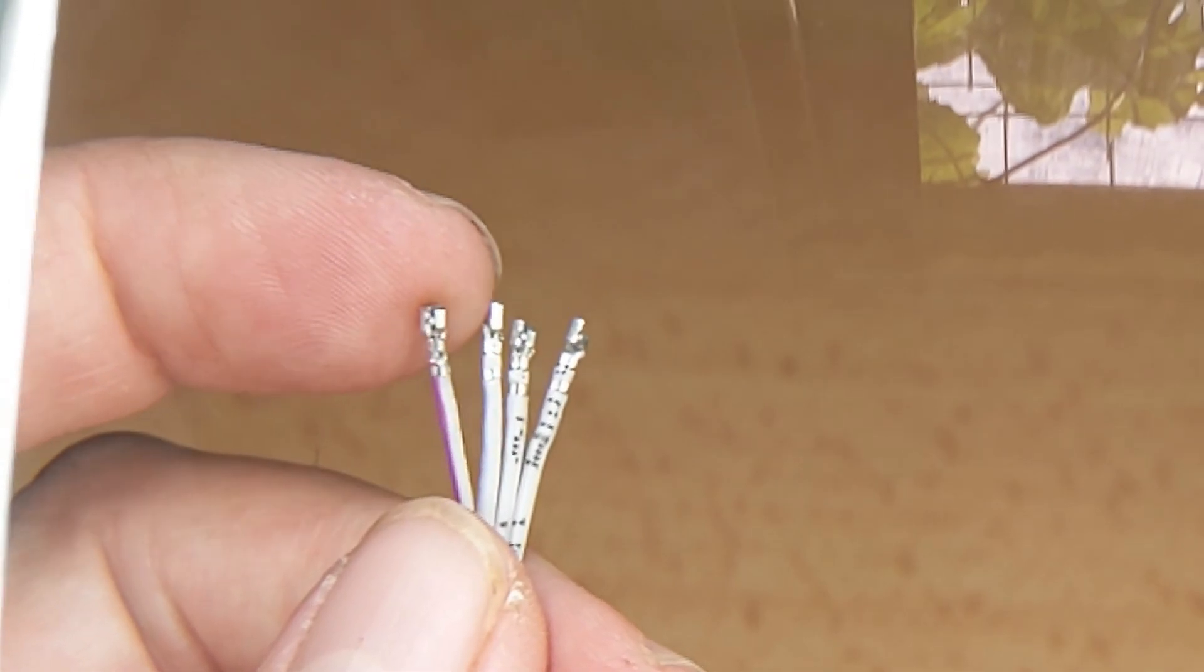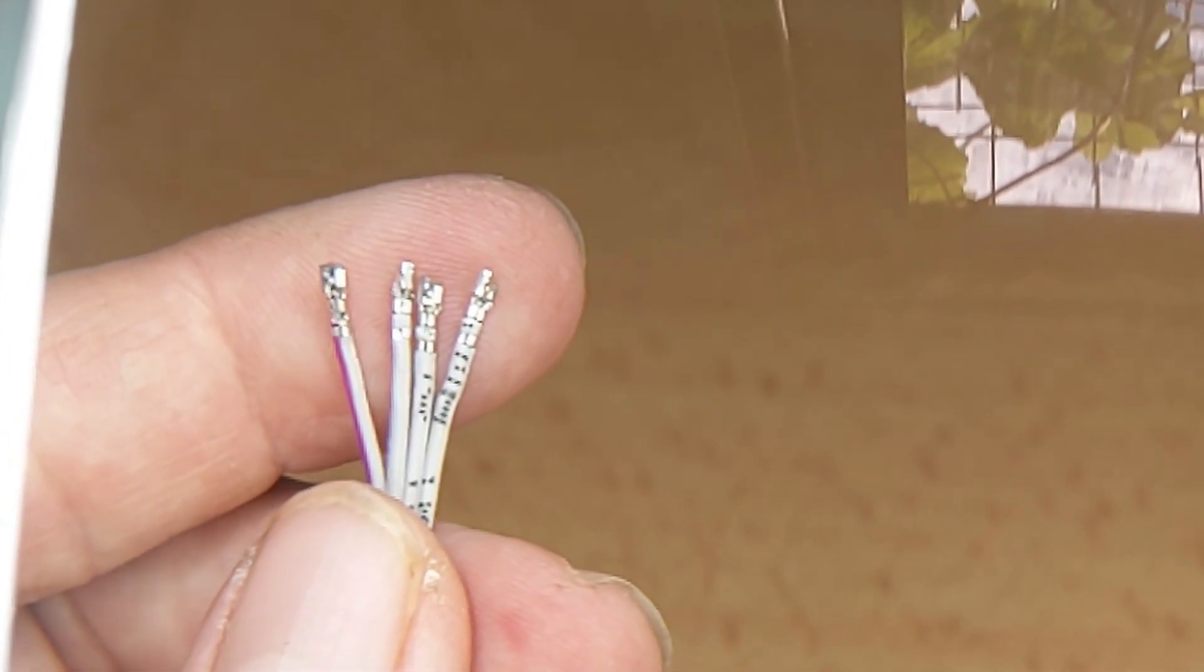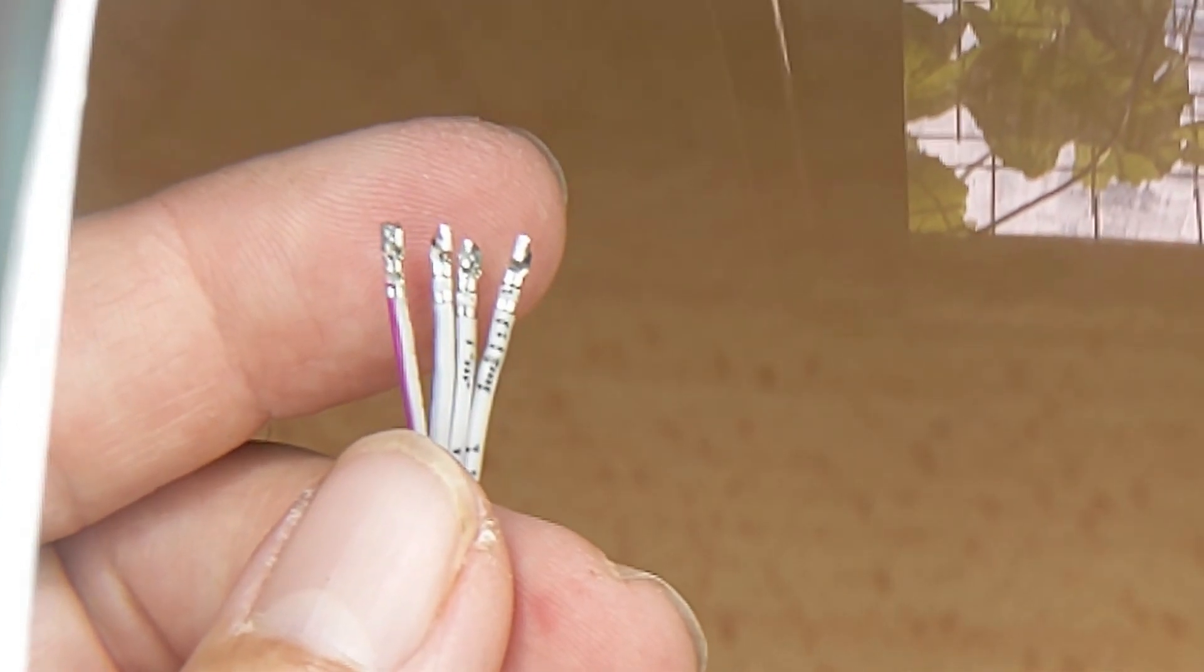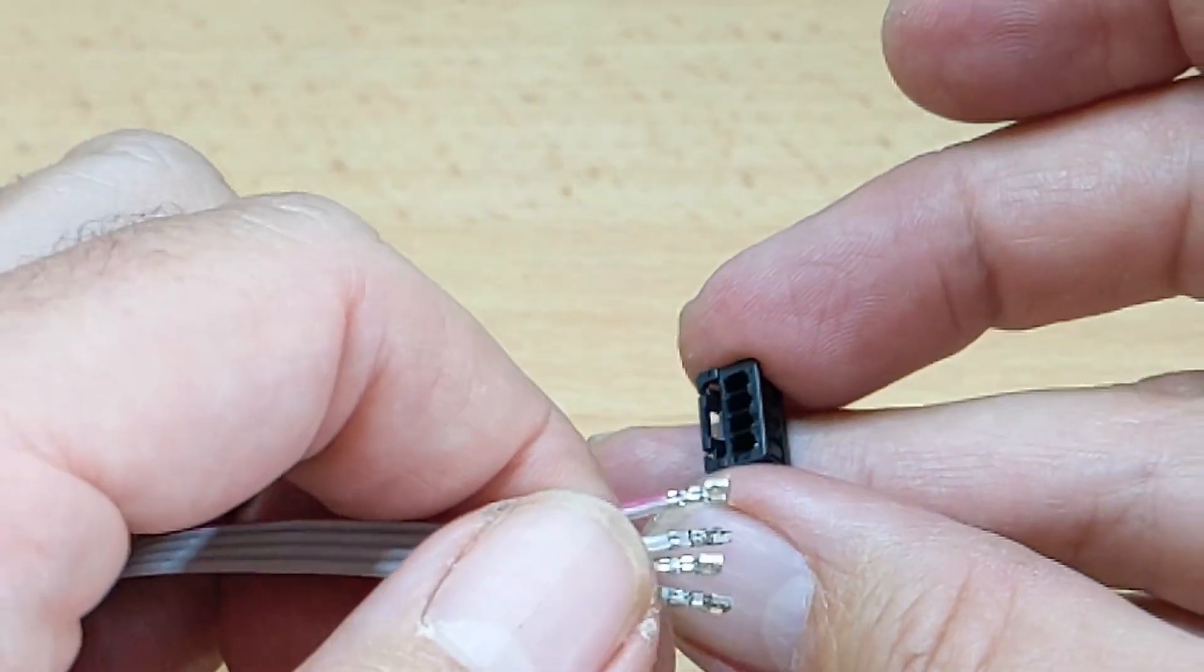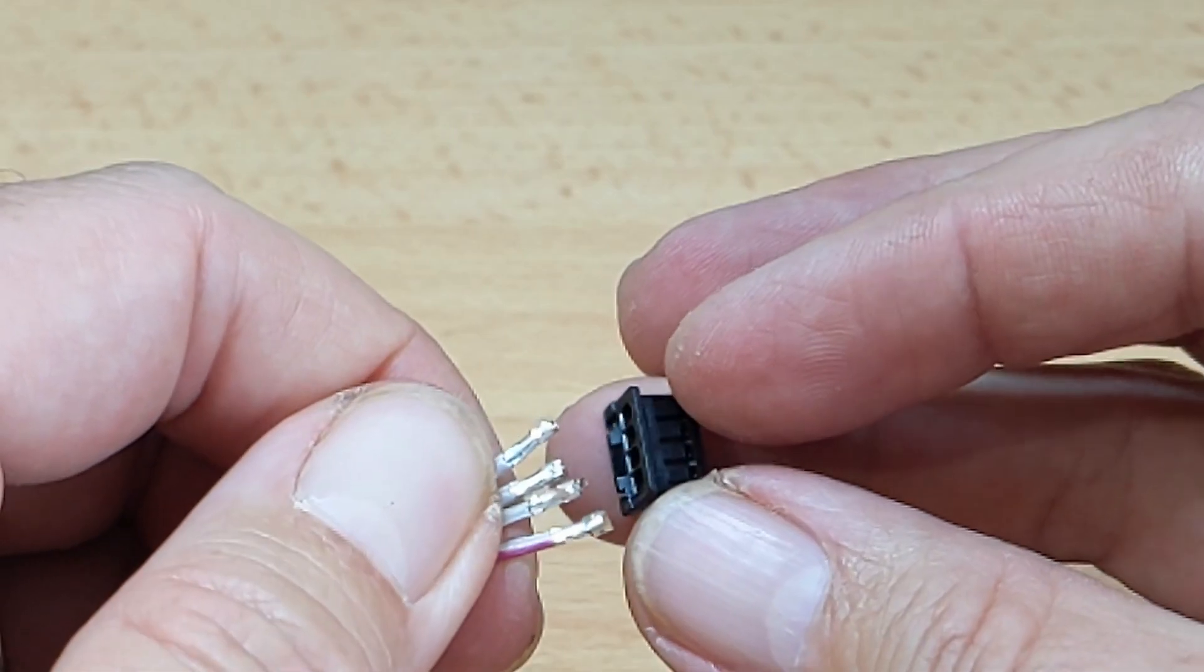Here we're looking at them through the magnifier hopefully you can see them there and so what we're looking for is no insulation in the second crimp and pulled on them and they didn't come off.